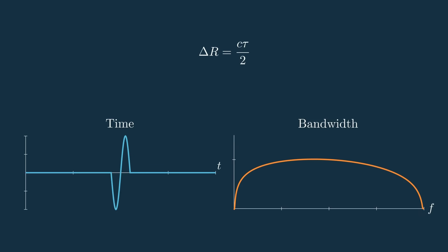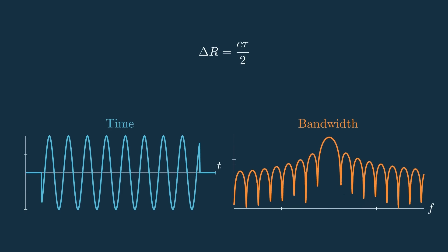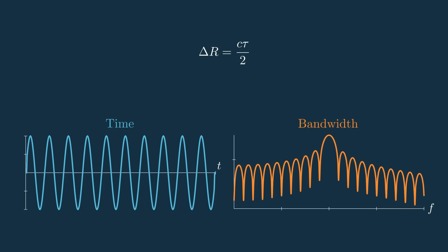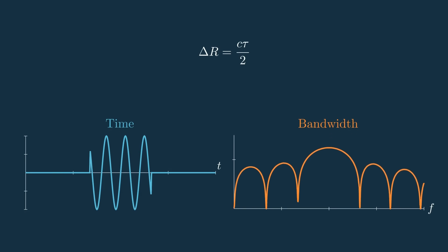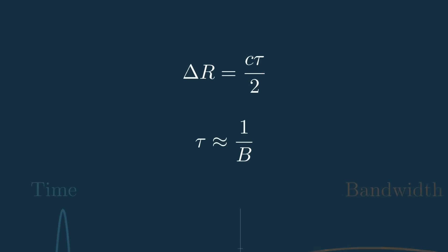We can achieve this using the fundamental relationship between time and frequency. In general, the longer we pulse, the finer the bandwidth resolution gets, and on the other hand, the more bandwidth we use, the finer time resolution we get. This means we can say that our pulse width tau is roughly equal to the inverse of the bandwidth B.